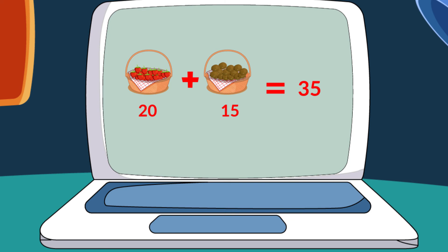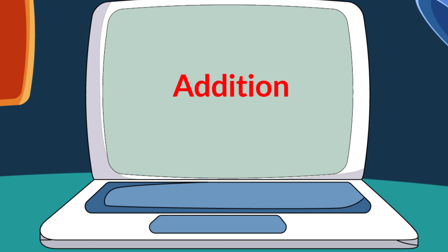So kids, we learned the sign of addition. And we learned that when we see this sign, we need to add and find the right answer — that method is called addition. And the answer we get is called sum.